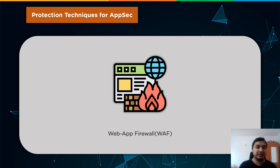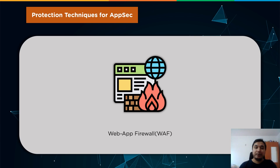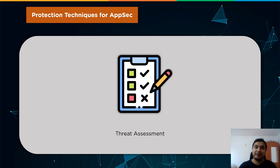Unlike a proxy server which conceals the identity of client computers, a WAF functions as a reverse proxy, shielding the server from exposure. It acts as a barrier in front of a web application, protecting it from the internet. Clients must pass through the web application firewall before they can access the application.